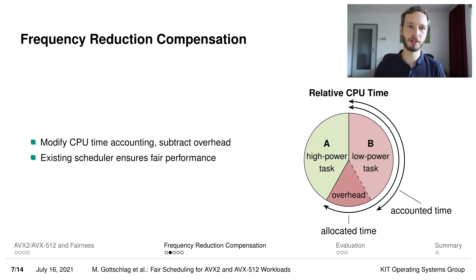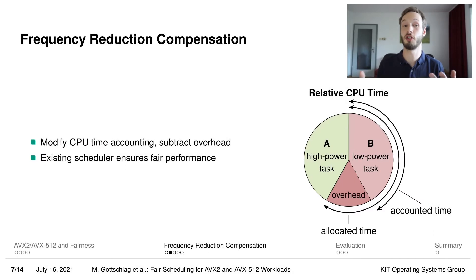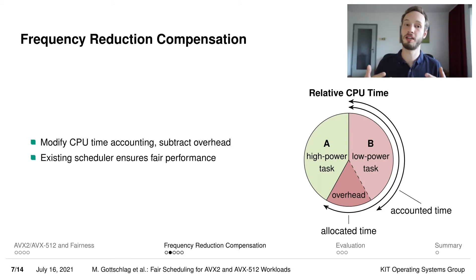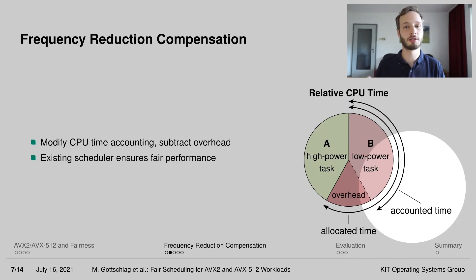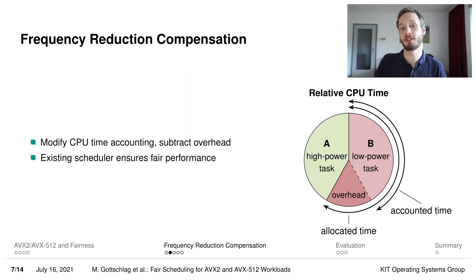If we take the time allocated to a task affected by frequency reduction overhead, so if we take the time slice of the task and just subtract the time lost due to the frequency reduction overhead, we arrive at a time that is more or less representative of the relative CPU performance experienced by the task. And if we feed that time back into an existing time-based fair scheduler, the scheduler would automatically result in a situation where all tasks have more or less equal CPU performance.